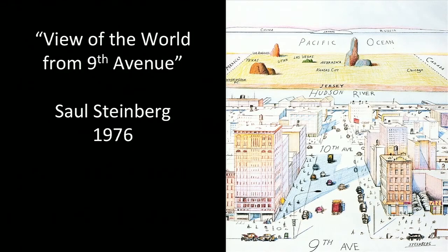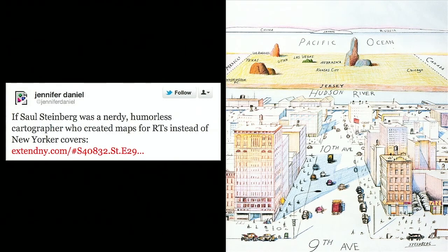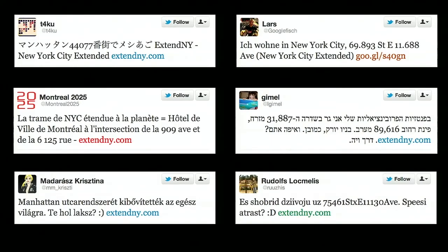A lot of people compared it to this New Yorker cover from 1976 called 'View of the World from Ninth Avenue,' which shows Ninth Avenue, then Tenth Avenue, then somewhere there's New Jersey, and off in the distance is Japan and the rest of the world. This whole website is really a joke about New York being the center of the world. Here's someone tweeting about it: 'If Saul Steinberg was a nerdy, humorless cartographer who created maps for retweets instead of New Yorker covers.' Some nicer tweets had people all over the world sharing where they are on this imaginary grid, which was really cool.